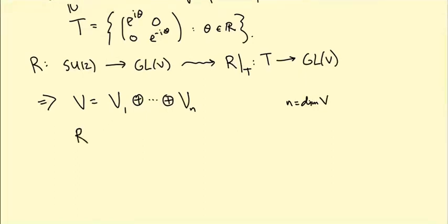Where R of e to the i theta zero, zero e to the minus i theta is just diagonal with respect to this splitting. So it's e to the i m1 theta down to e to the i mn theta and zeros in the off diagonal.